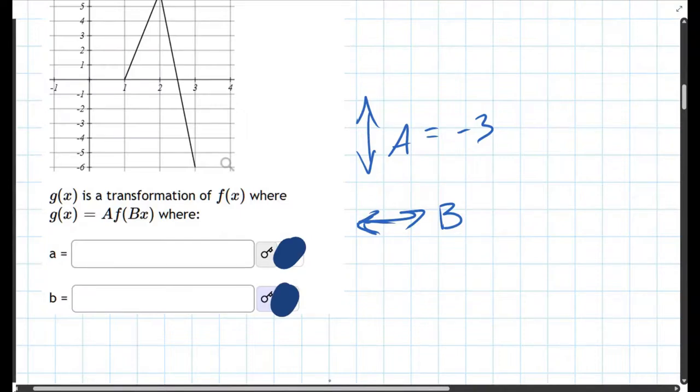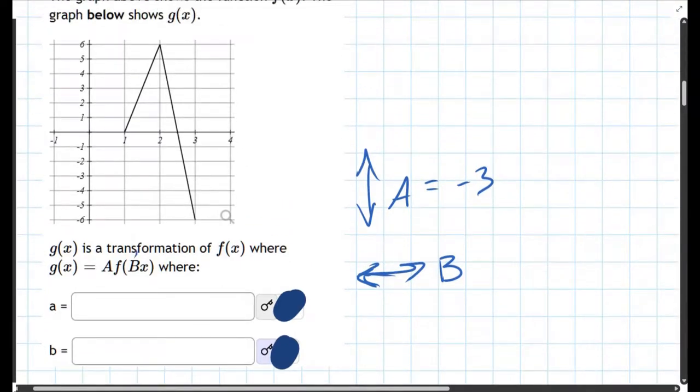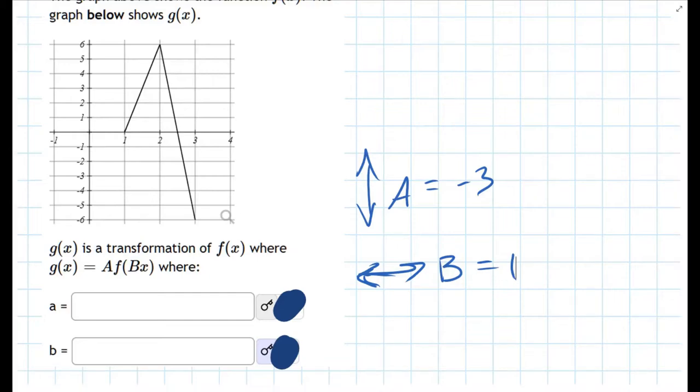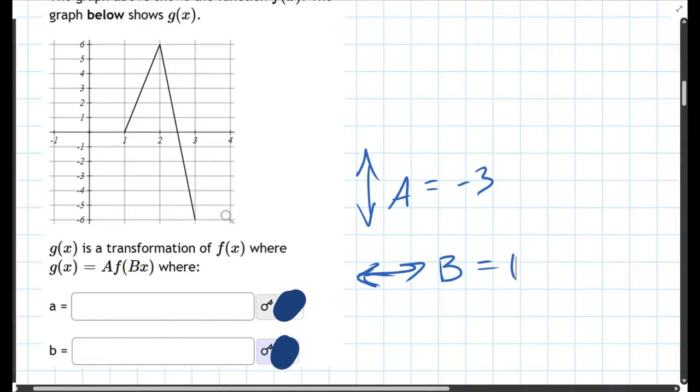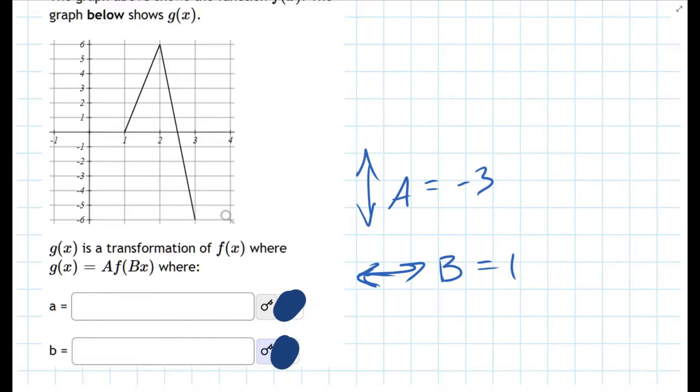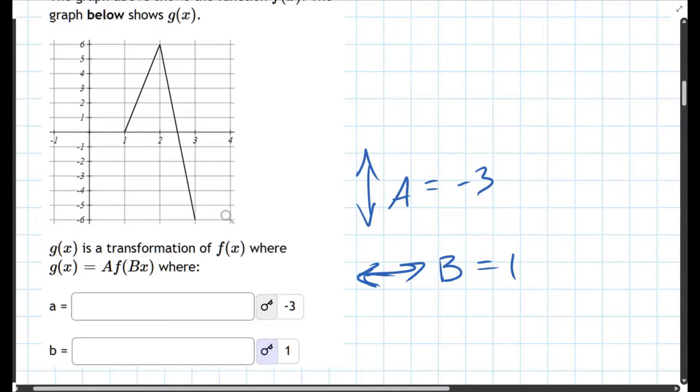What does it mean to have no effect? Well, if we look, what do you multiply x by to have no effect? You multiply x by one. So if b is one, that's how a stretch has no effect. Be careful: a stretch of zero means everything becomes zero, and you would never get a stretch of zero. So no stretch means a stretch of one, and we should see negative three and positive one.